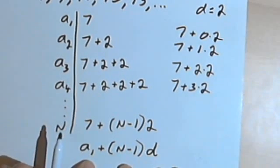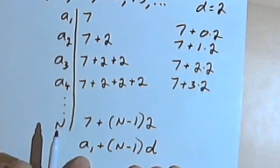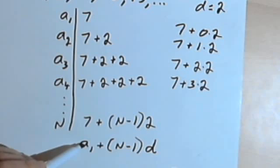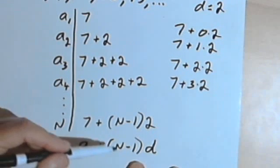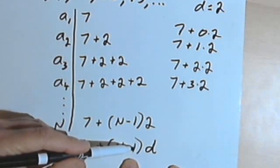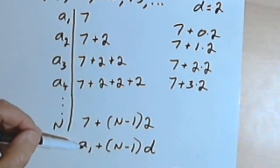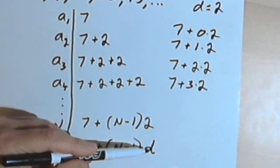So now that means I've got a formula for finding any term of any arithmetic sequence. I'm going to take the first term, the a sub 1, and then to that I will add n-1, the number of the term minus 1, and multiply that by the common difference. So my formula will be a sub 1 plus n-1 multiplied by d.